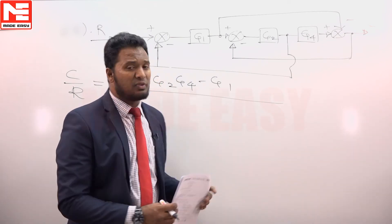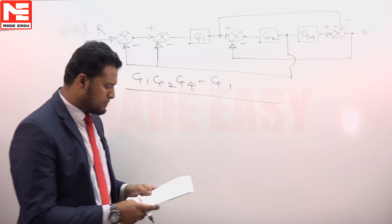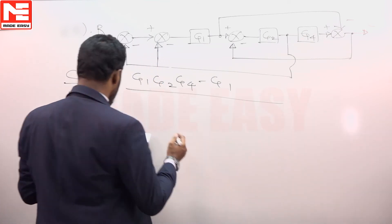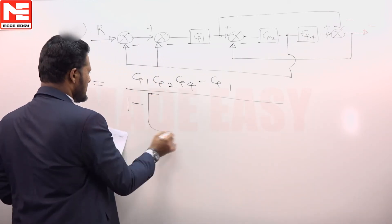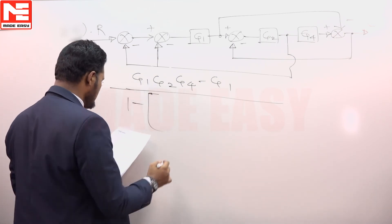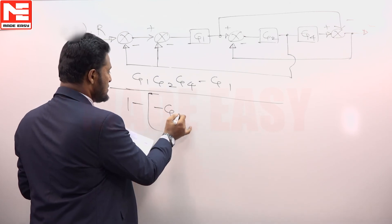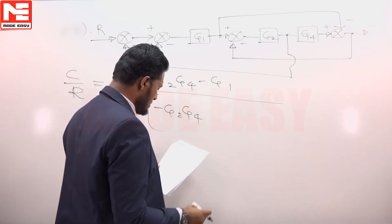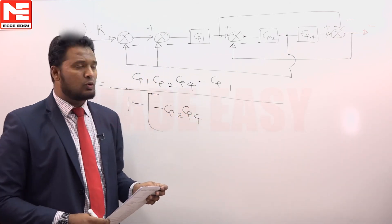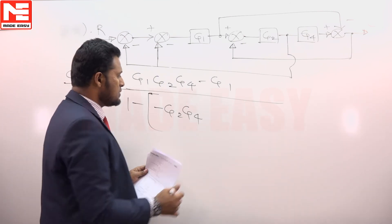There are totally 5 loops of this gain forming the delta using those loop gains. One minus of one loop gain being minus G2 G4, and there are remaining 4 loops of the gain G1 G2.